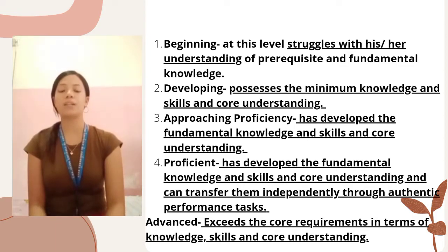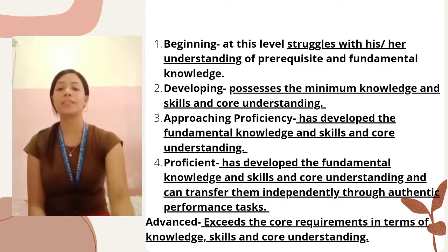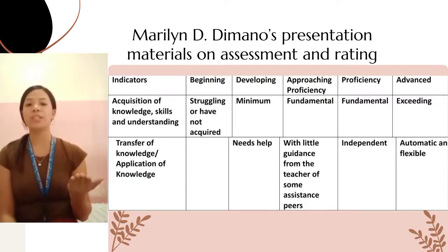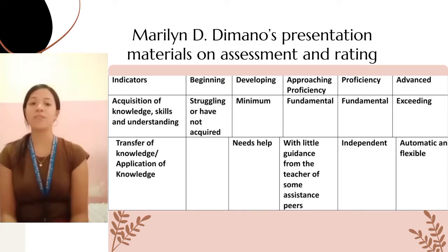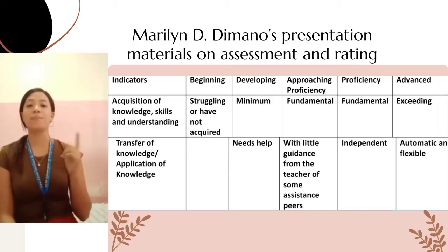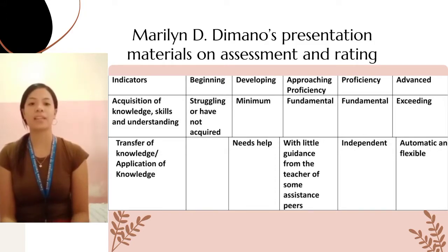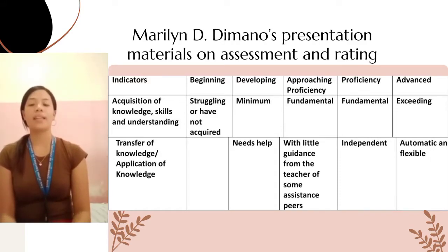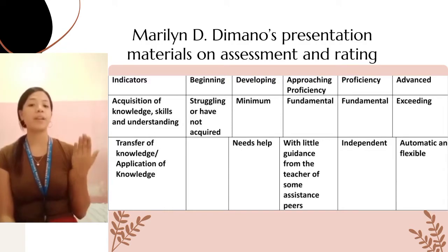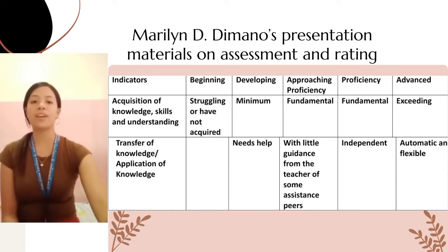In translating proficiency levels into numerical values, the table shows the following: beginning corresponds to 74% and below; developing corresponds to 75%–79%; approaching proficiency corresponds to 80%–84%; proficient corresponds to 85%–89%; and advanced corresponds to 90% and above. The source is DepEd Order 31 Series 2012.